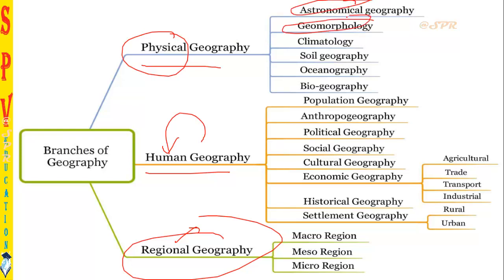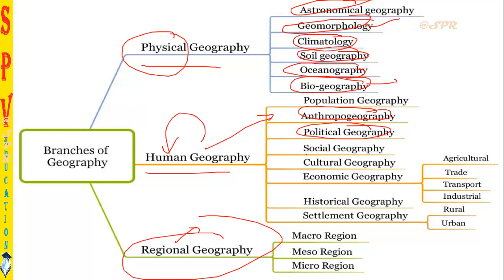In physical geography, it is further divided into astronomical geography, geomorphology, climatology, soil geography, oceanography, and biogeography — which has strong environmental concepts. In human geography, we will be seeing population geography, anthropogeography, political geography, social geography, cultural geography, and economic geography — which is further divided into agriculture, trade, transport, and industry.